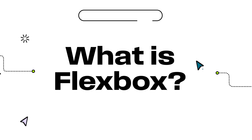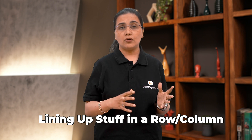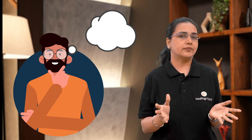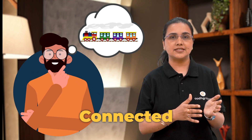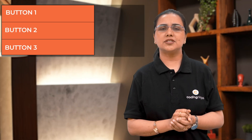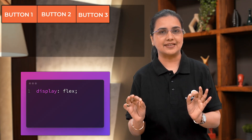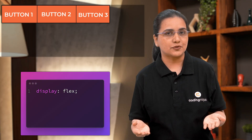Let's start with: what is Flexbox? Flexbox is like lining up stuff in a row or a column. It's great when your layout flows in one direction. Think of it like a train — the boxes are the cars and Flexbox keeps them connected, spaced and aligned. To apply flex to your layout, you just have to do one thing: set the display property to flex.